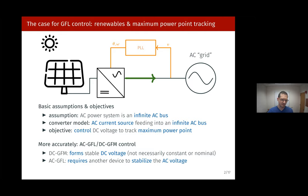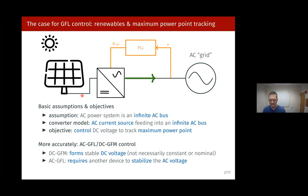For the purpose of this talk, I'll call these controls AC grid following but DC grid forming, because what they actually do is require a stiff and stable AC system to lock onto — relying on external devices to stabilize the AC terminal — and then feeding whatever power is needed to stabilize the DC side to track the maximum power point. It's not only that you're not supporting the grid; you're actively relying on the grid to create the power flow you want on the DC side.